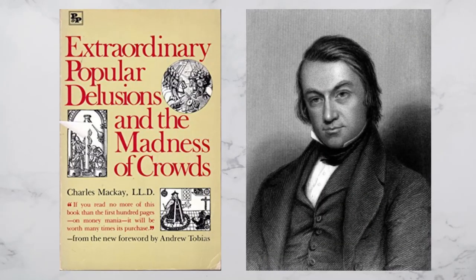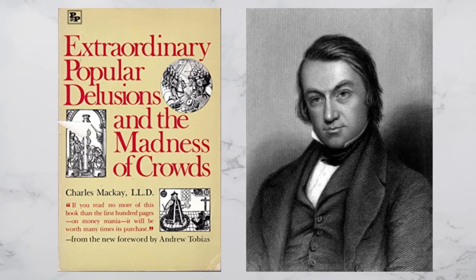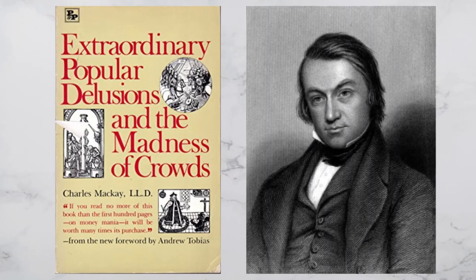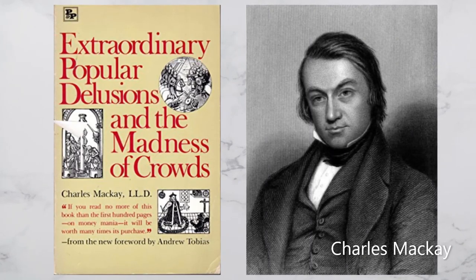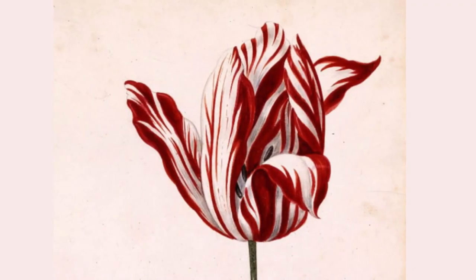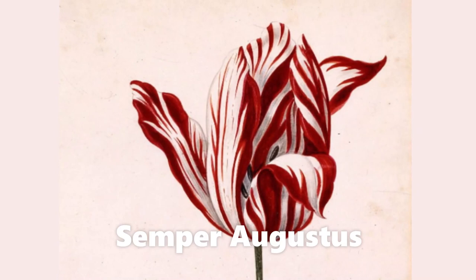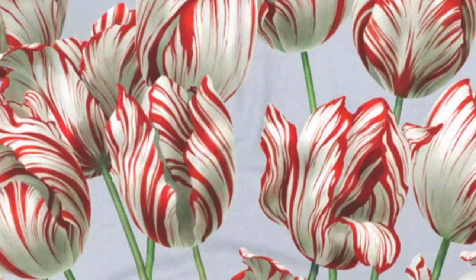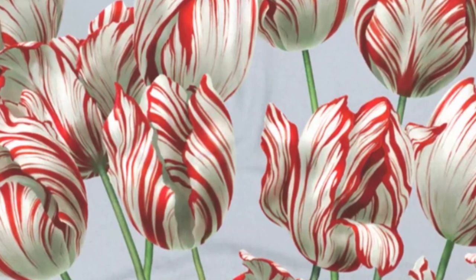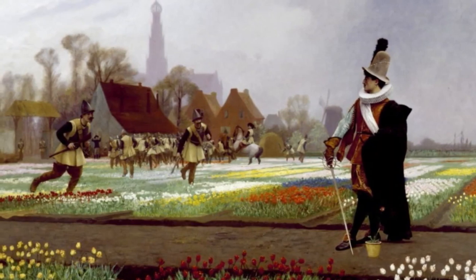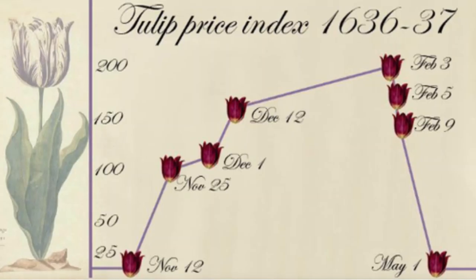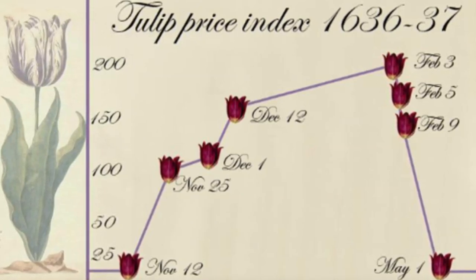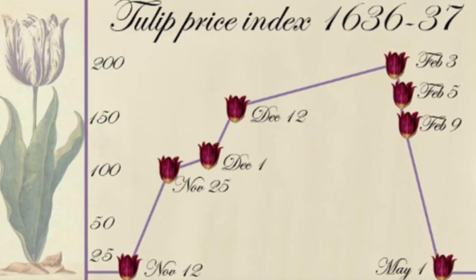The 1637 event gained popular attention in 1841 with the publication of the book Extraordinary Popular Delusions and the Madness of Crowds, written by Scottish journalist Charles McKay, who wrote that at one point 12 acres of land were offered for a Semper Augustus bulb — the most prized and expensive variety in the Dutch tulip mania. Tulip mania still provides valuable lessons for investors today. Metaphorically, the term tulip mania is now often used to refer to any large economic bubble when asset prices deviate from intrinsic values.